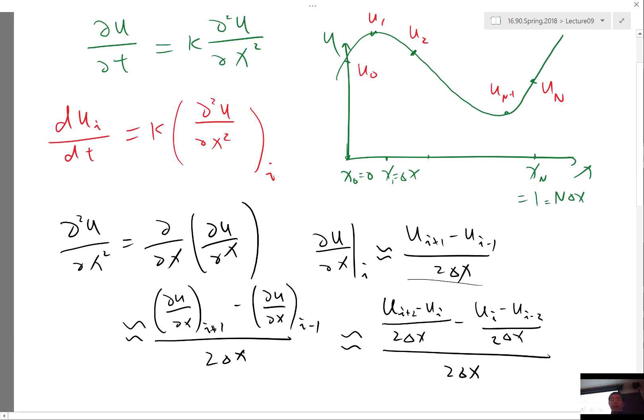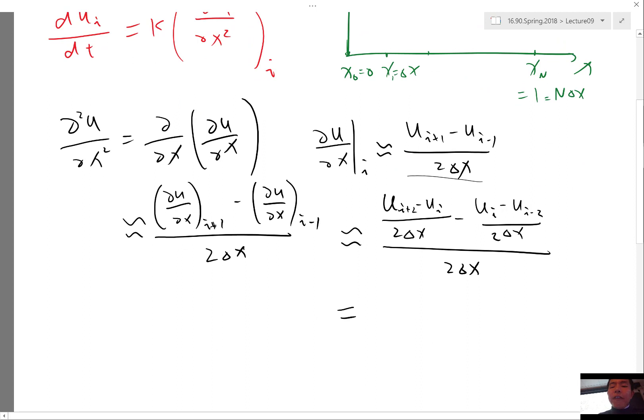Alright so that's our scheme and if you write it down we have 4 delta x squared underneath and we have ui plus 2 minus actually 2 times ui plus ui minus 2.